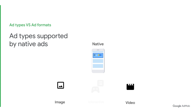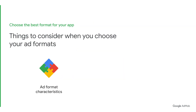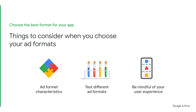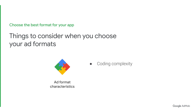Every single app is unique, so here are a few things to consider when choosing an ad format for your app. One, does the ad format fit into your app layout? Two, which ad format performs best in testing? Note that testing should look at revenue and user retention. And three, does the ad complement your user experience? Take into account the technical complexity of different ad formats. If you are new to ad monetization, banners might be a good starting point to help you learn how to serve ads to your app with its easy setup.